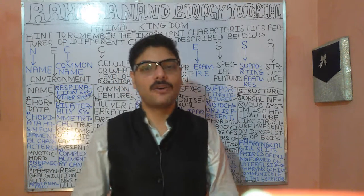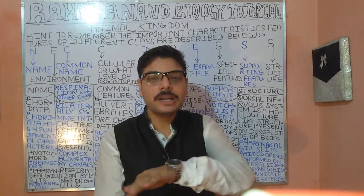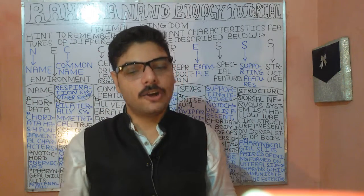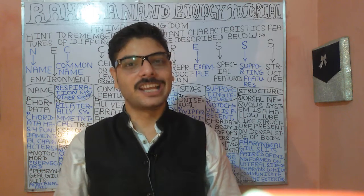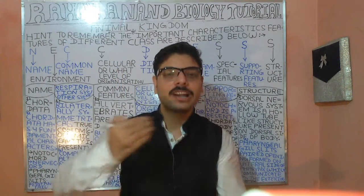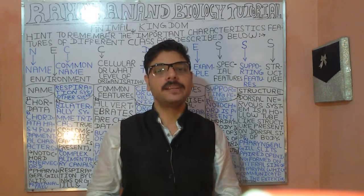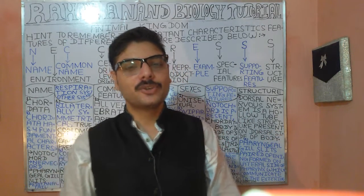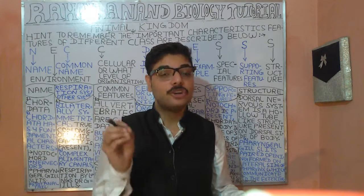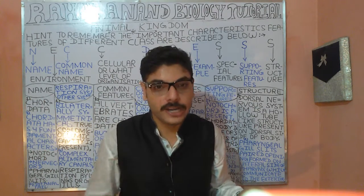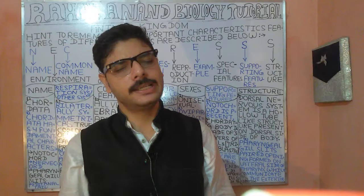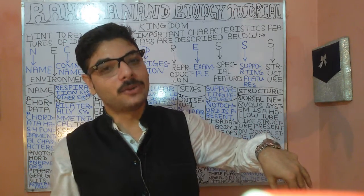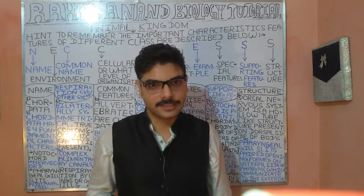In terms of the cellular level of organization, chordates have organ system level of organization. Chordates are divided into sub-phyla: Urochordata, Cephalochordata, and Vertebrata.